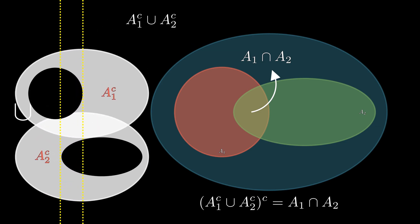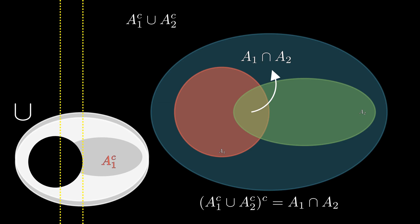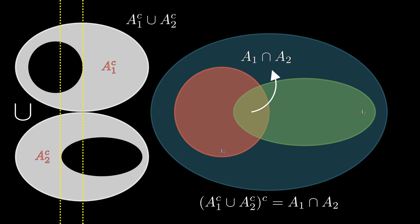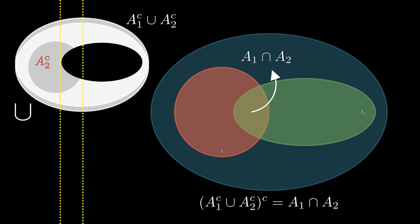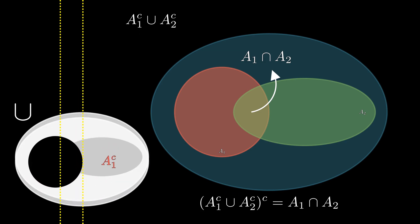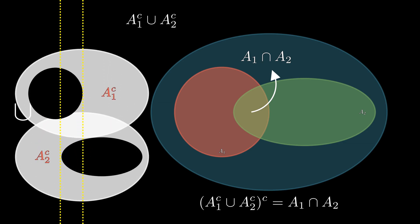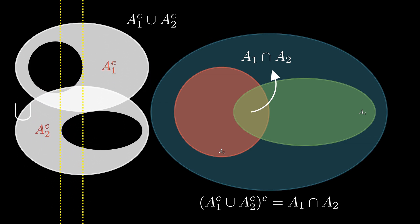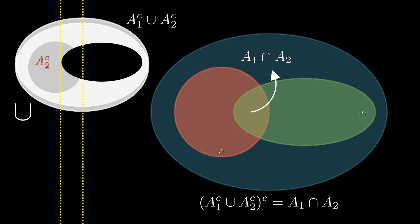So when we take the complement of the left hand side, which is the region where they do not overlap, this actually becomes the intersection. So, in fact, our job is already done. We've proved De Morgan's Law for the case of two subsets, A1 and A2. And we've done so in a nice geometric way.